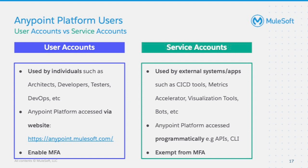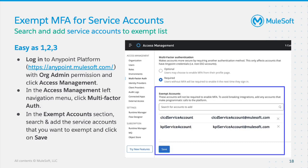Let's see how to exempt a service account. Log into Anypoint platform with Org Admin permissions and click Access Management. From the left navigation menu, click multi-factor auth. Search and add the service account you want to exempt and click Save. That's it — the service account is exempt from MFA while the rest of the user accounts remain MFA-enabled.